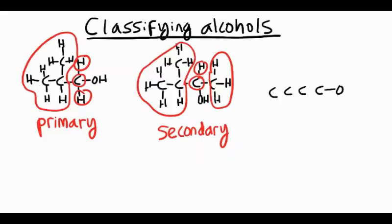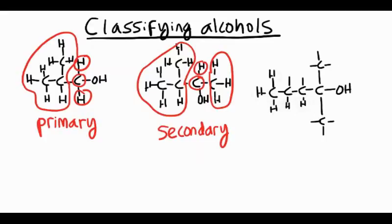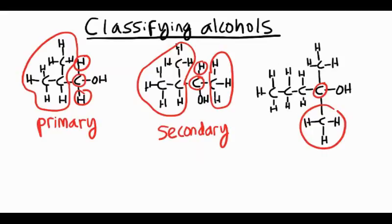Let's have a look at a final example. We've now got four carbons in the chain, and off that first carbon we've got two methyl groups and our OH group. So on the carbon that has the OH group, we've actually got one, two, three alkyl groups, which makes it a tertiary alcohol.